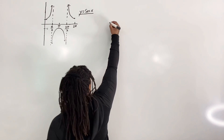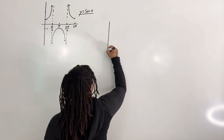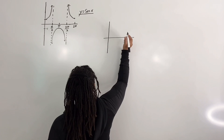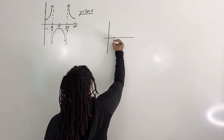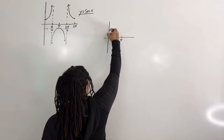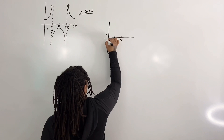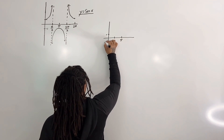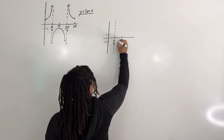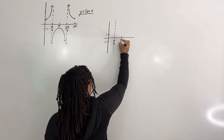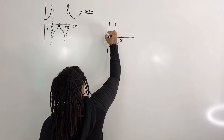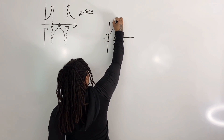Let us redraw the graph of secant with the restricted domain. We have pi over two, we have pi, and we have one and negative one, with an asymptote at pi over two. There is a point at pi, negative one swinging out, and a point at zero, one swinging up.